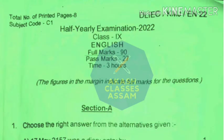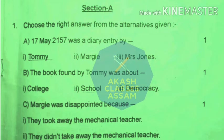Hello my dear students of class 9. In this new video, we will see the English question paper of the Karim Ganj district. Let's see what it has. In section A, some sentences are given and you will get three options or alternatives for each sentence. You have to choose the right answer from the alternatives given.